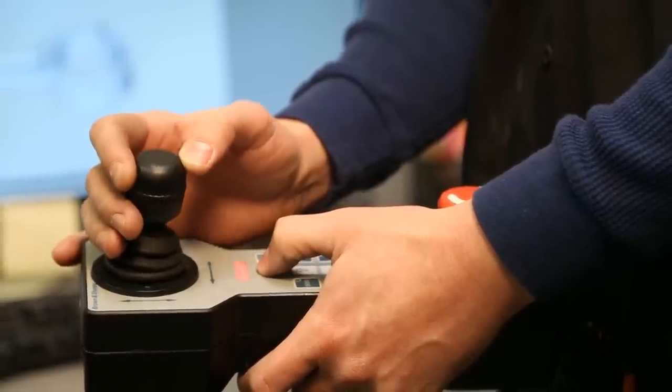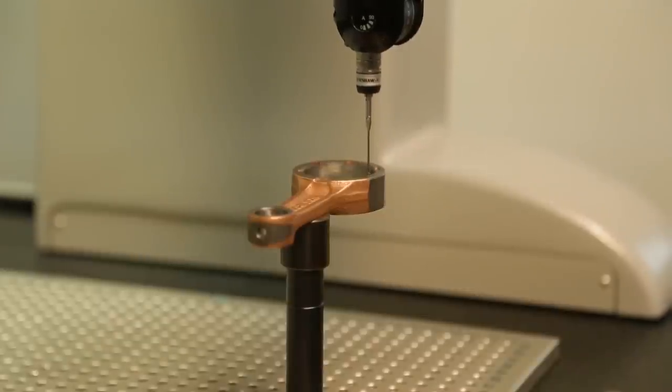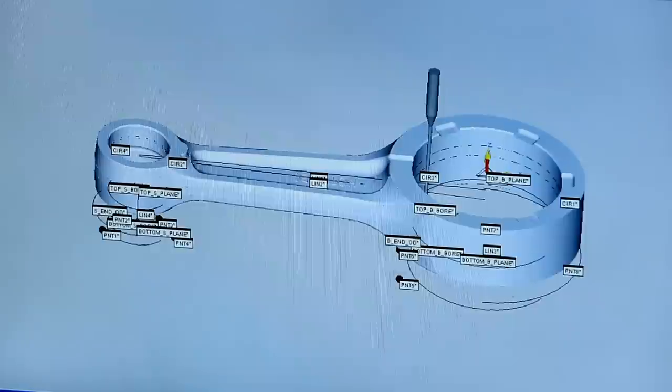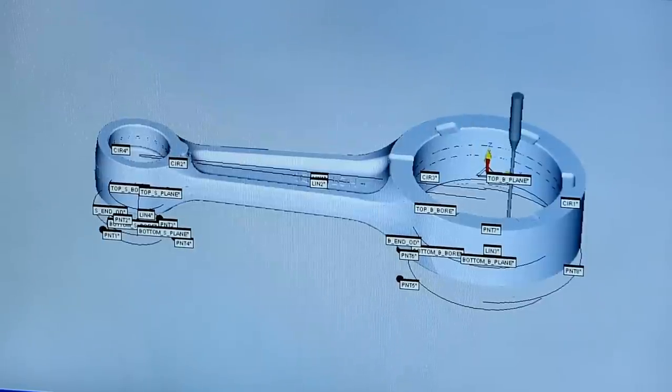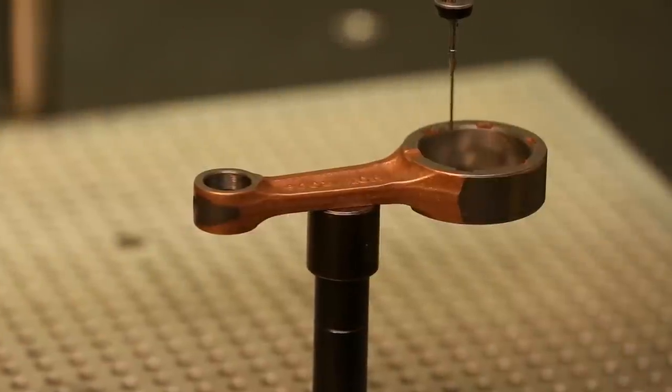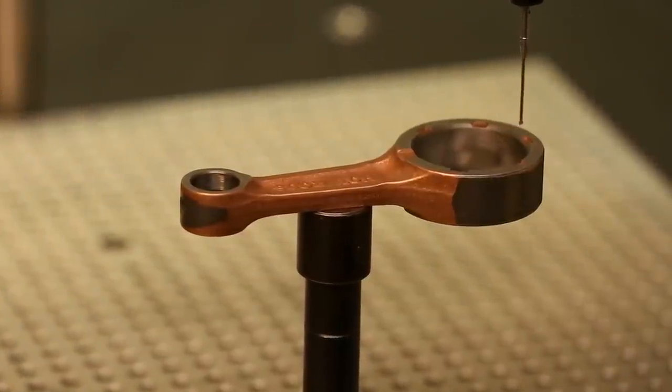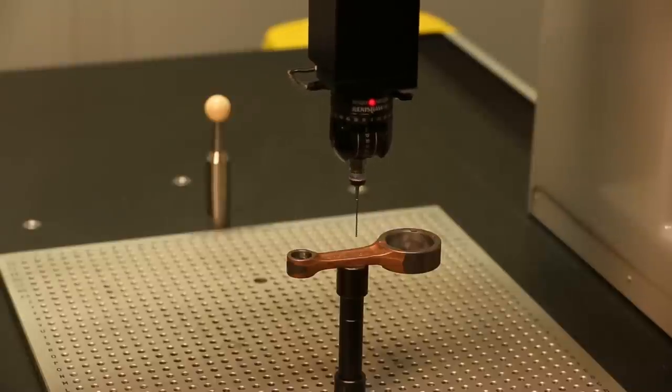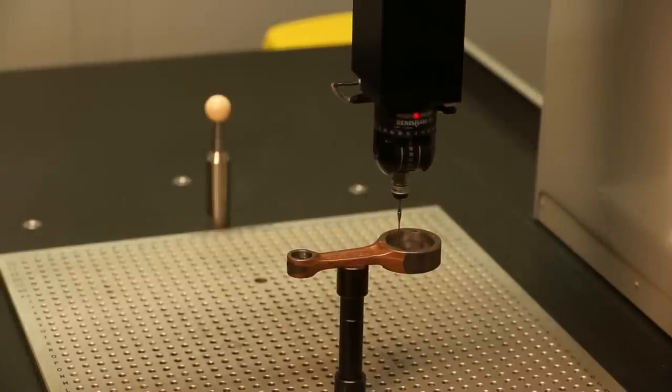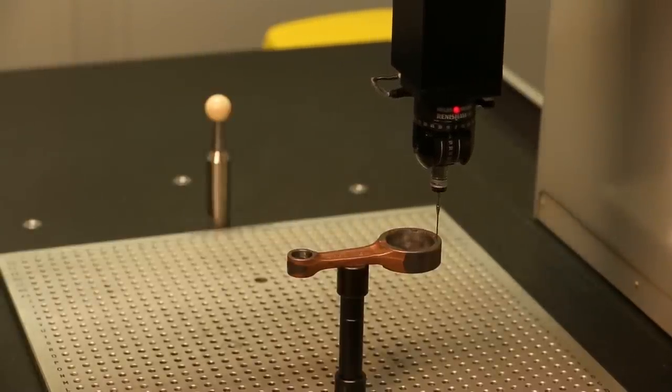The CMM operator inspects all of the critical dimensions of the rod. This includes the center to center of bearing holes, the overall length, the individual diameters of the rod bearing and wrist pin bores, the overall width of the rod at each end, and checks for parallelism and any twist of the rod. This thorough inspection ensures that each mill is set up and operating correctly.